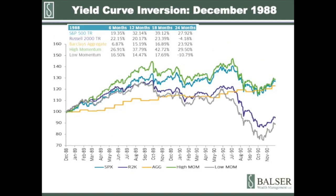December of 1988 brought the first yield curve inversion after the market crash of 1987. It wasn't much of a problem for investors — returns were strong across the board for 12 months. Momentum laggards and small cap stocks performed during the second year after the inversion. The spread between high and low momentum stocks remained robust for the entire sampling period.